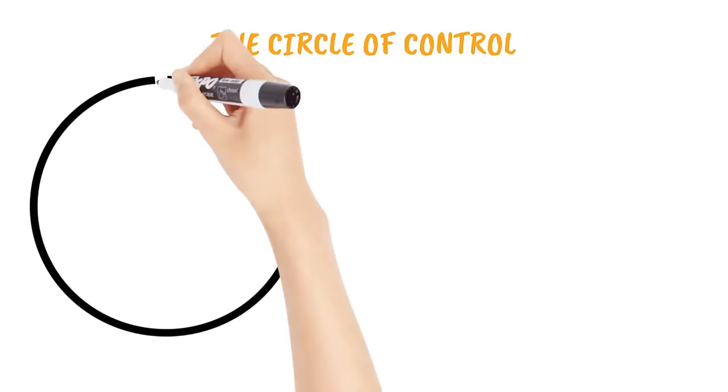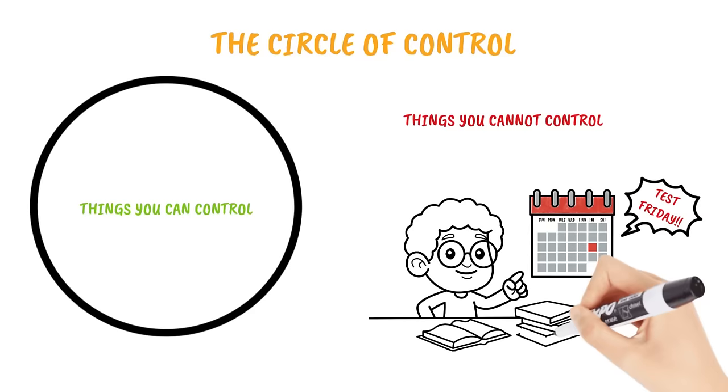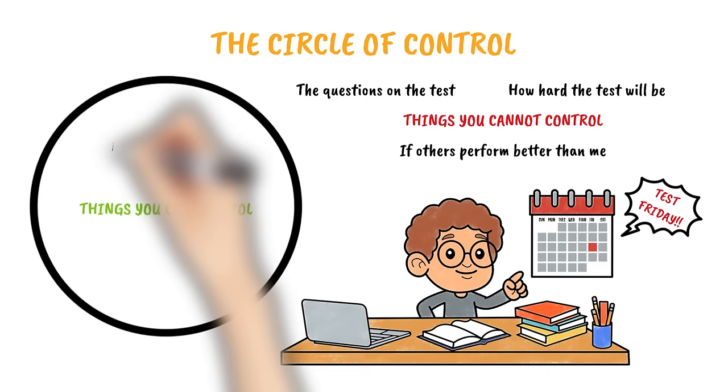You can also use the Circle of Control if you are going through a situation that is causing you stress or worry. Start by writing all the things about the situation you cannot control on the outside of the circle. Then list all the things about the situation you can control in the center of the circle.